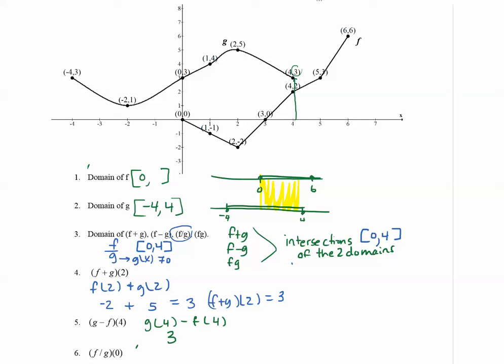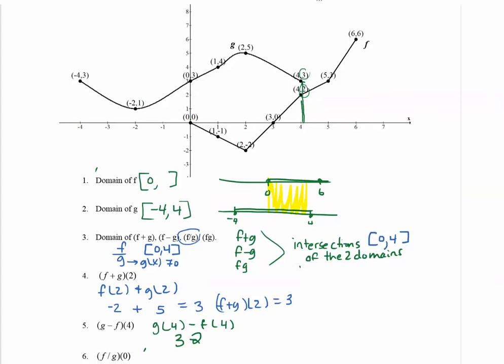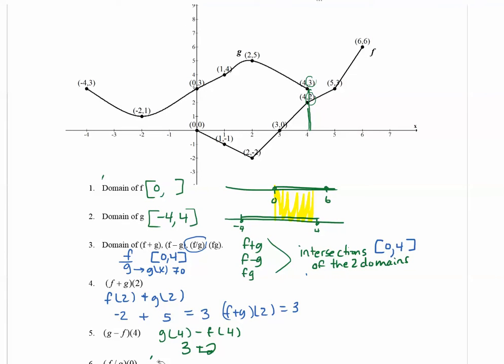So f of 4, go to 4 on the x-axis and hit the f graph, and the y value is 2. And now we want to subtract 3 minus 2, we get 1. So g minus f of 4 is equal to 1.